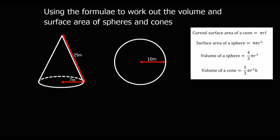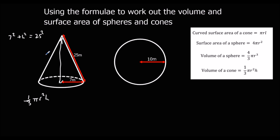Here are two questions to try: work out the volume and surface area for a cone and a sphere. For the cone, we need to work out h to find the volume. Using Pythagoras: 7 squared plus h squared equals 25 squared, so h squared equals 25 squared minus 7 squared, which is 576, and h equals root 576, which is 24. So the height is 24 meters.